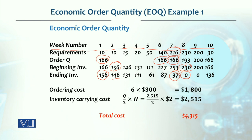Beginning inventory became 230 and since the requirement was 230, it was fully met, so ending inventory was 0. Similarly, in week 9 the requirement was 200; 166 could not meet it, so we placed an exact order for 200. Beginning inventory was 200 and ending inventory became 0. In week 10 we returned to the original lot size because the requirement of 30 can be met by 166 units. So beginning inventory in week 10 is 166 and deducting 30 consumed units, ending inventory is 136.